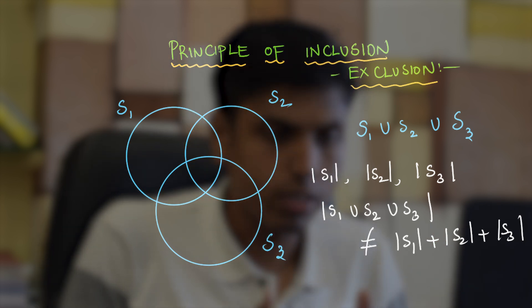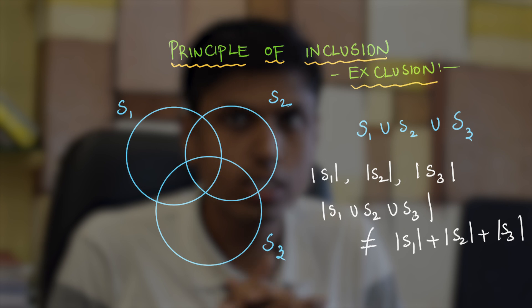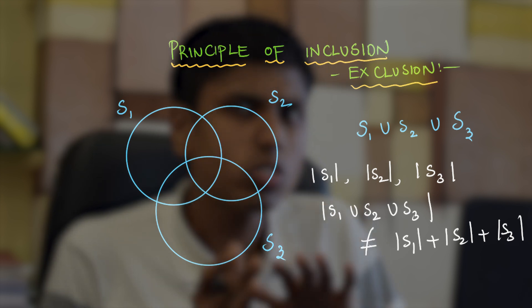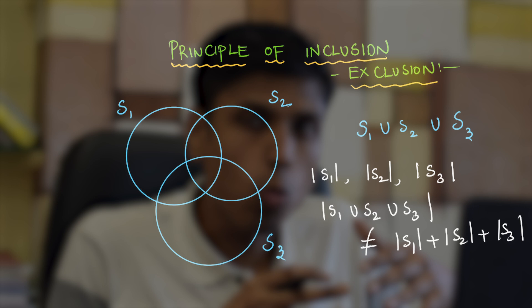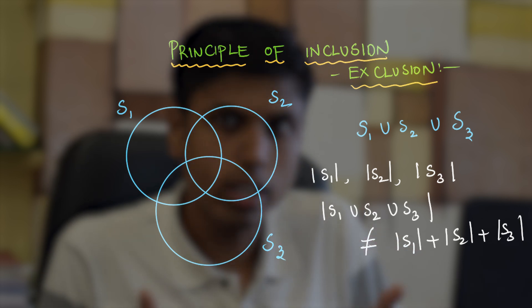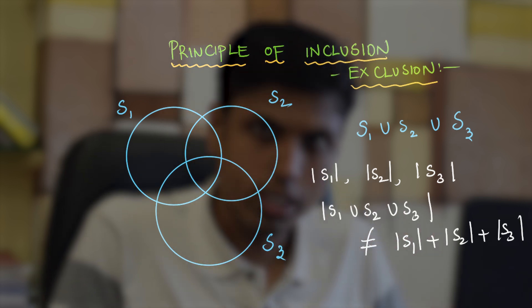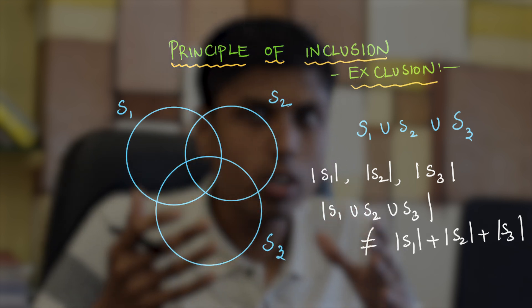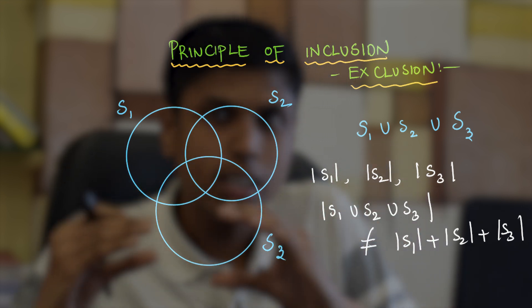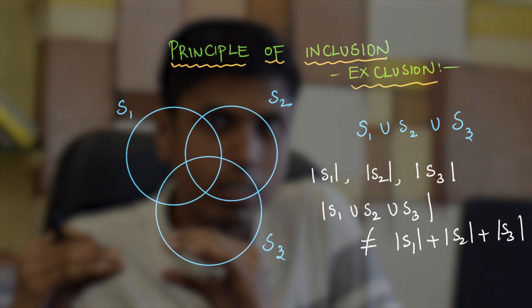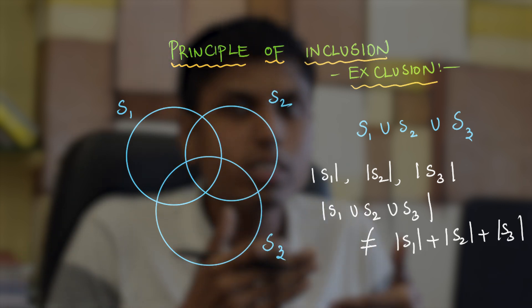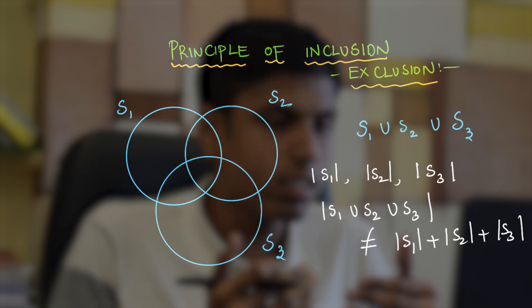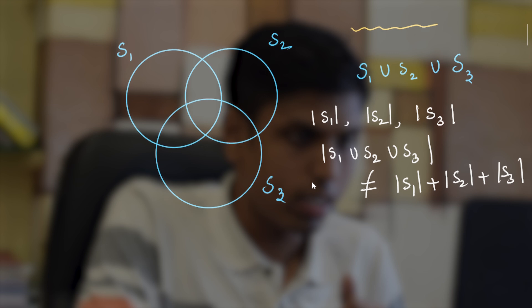So principle of inclusion exclusion helps us to get rid of this difficulty. And how exactly? It sort of purposefully overcounts the union and then undercounts it and then overcounts it and then undercounts, overcounts, and slowly you can observe that error decreases to zero. This is how it is designed and let's see how this is counted.